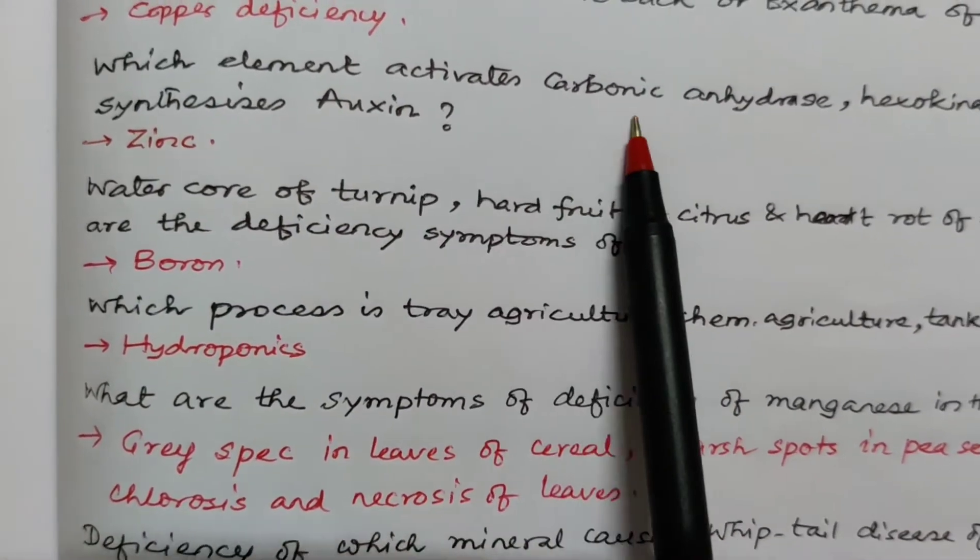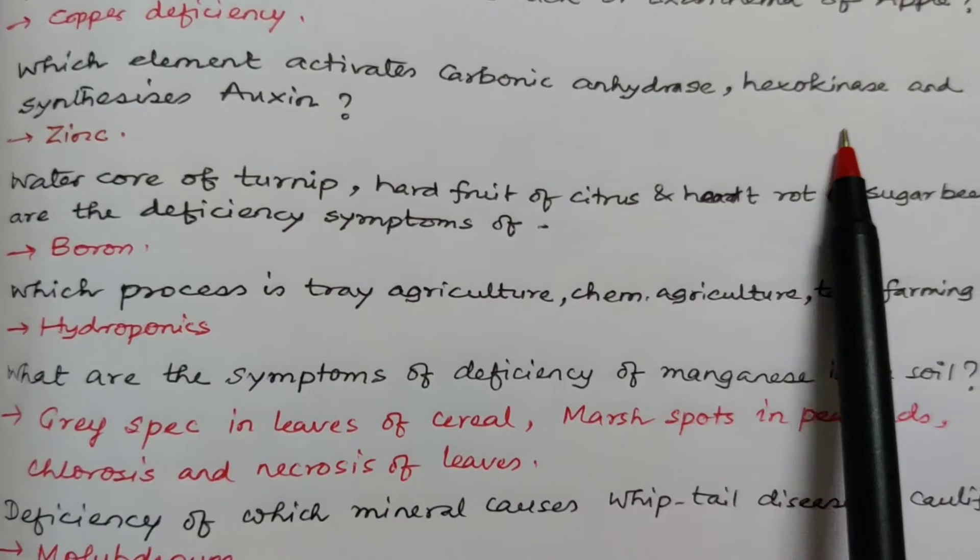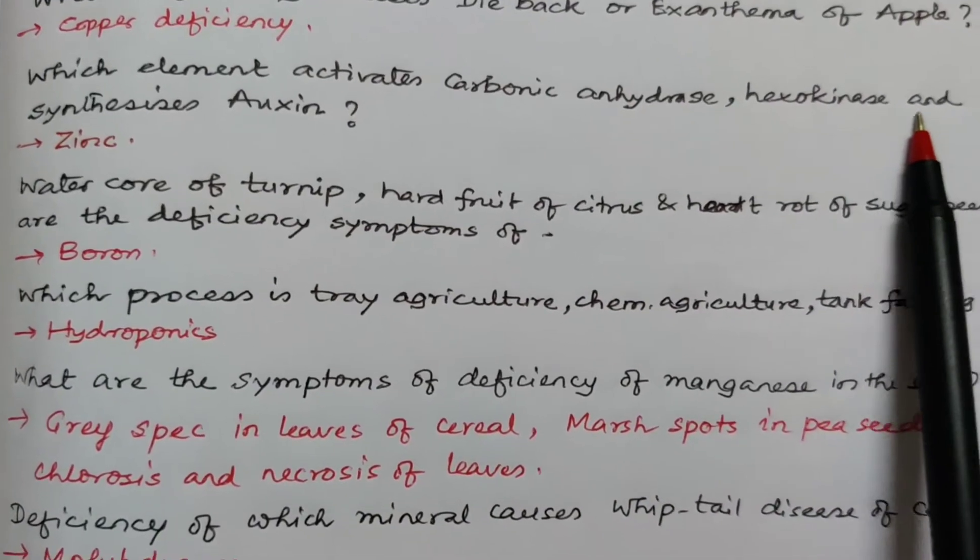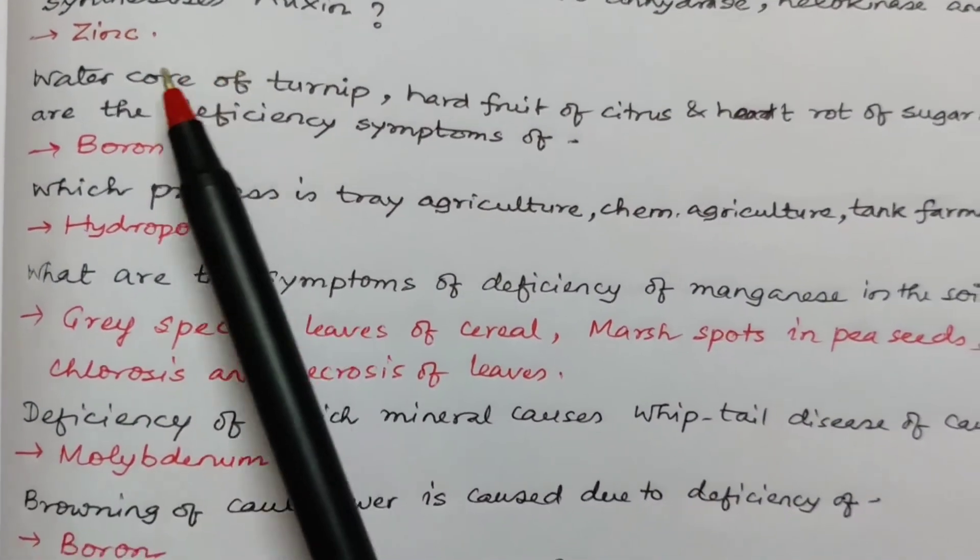Which element activates carbonic anhydrase, hexokinase and synthesizes auxin? It's zinc.